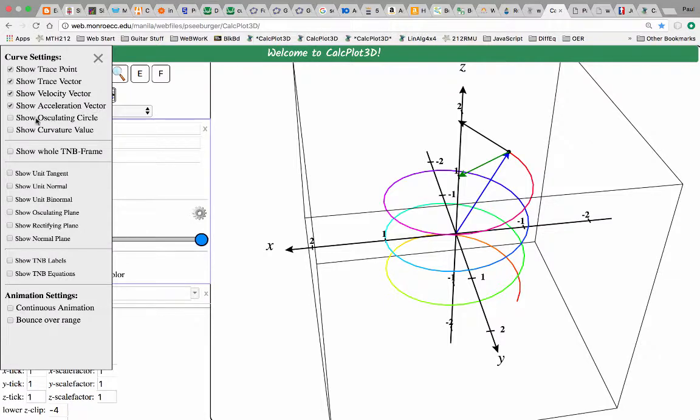If you'd like, you can also show the osculating circle, the curvature value. This box helps you select all these below here to show the whole TNB frame. You can also select those items one at a time. And then you can show or hide the TNB labels and TNB equations, which I think are also shown automatically if you select this.